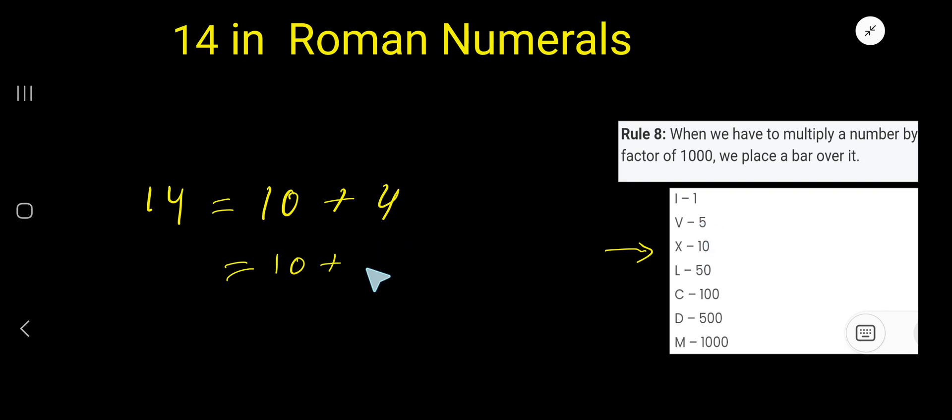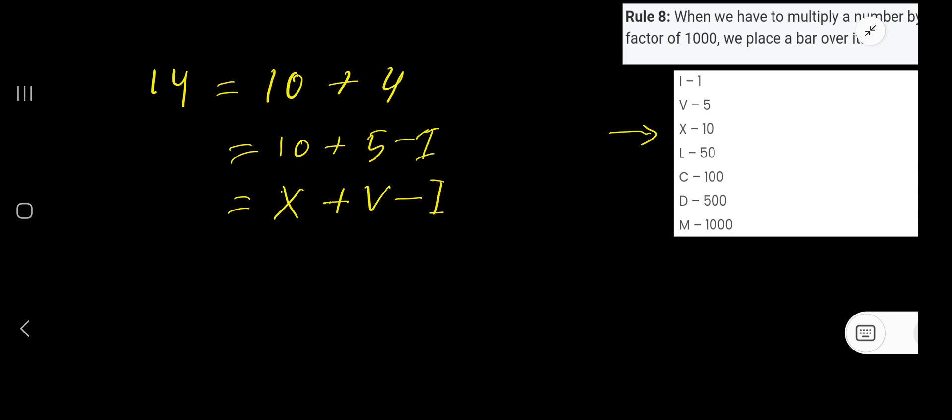So we'll write, look, 5 minus 1. There is a symbol for 5 and also we have a symbol for 1, which is I. So write that: 10 means X, 5 means V minus 1 means I.